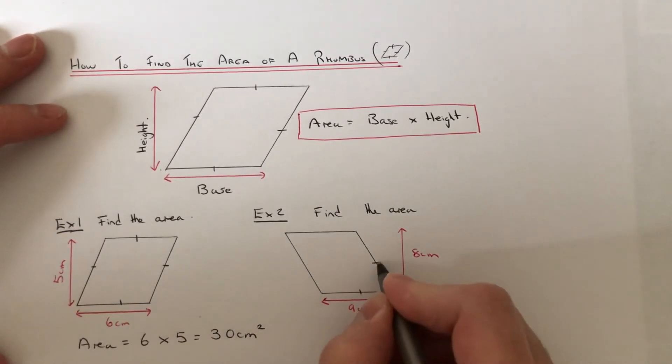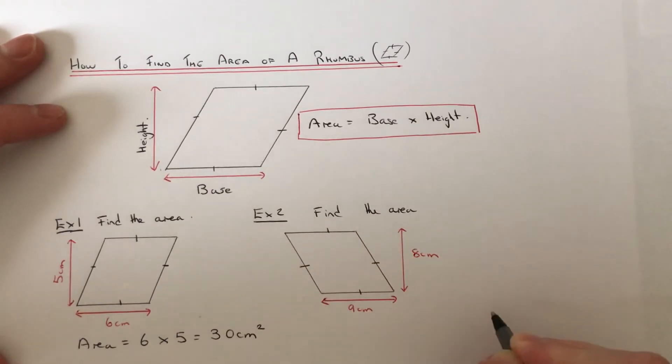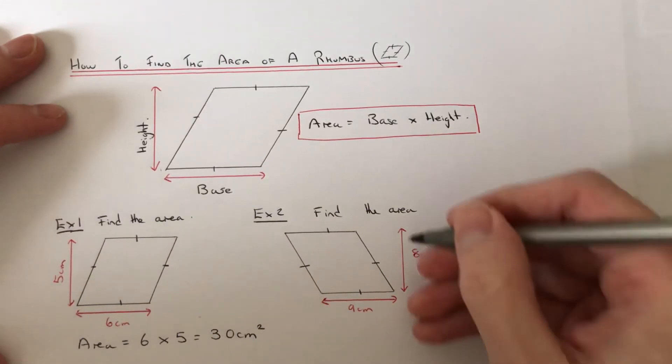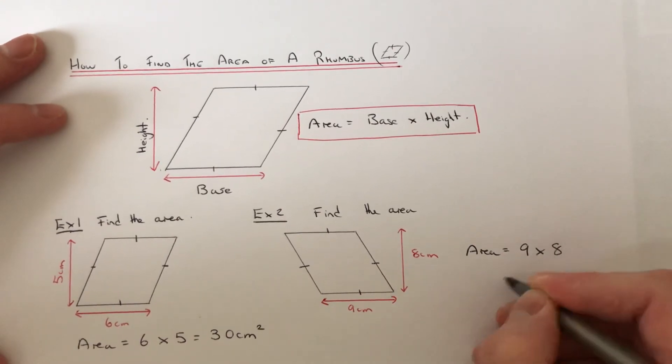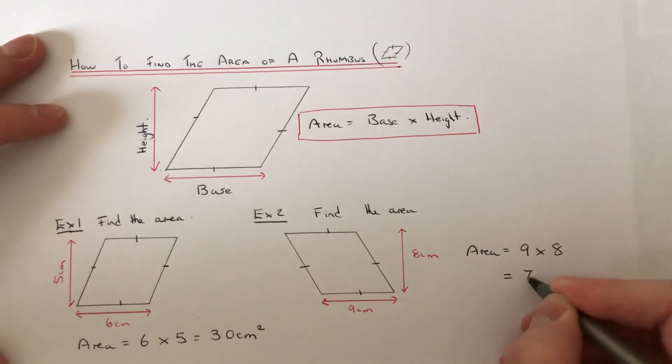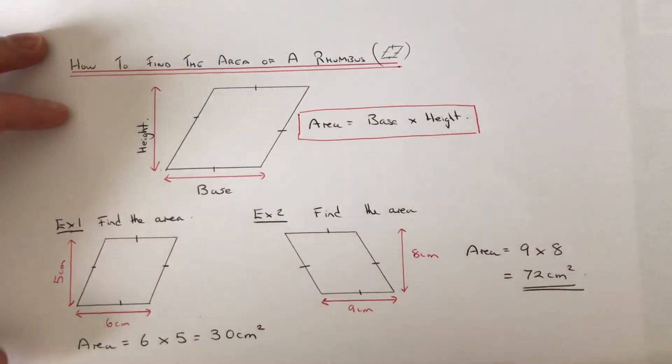This time all the sides are 9 centimeters long. So again, to work out its area we just multiply the base length by the perpendicular height. So it would be 9 times 8, which is 72 centimeters squared.